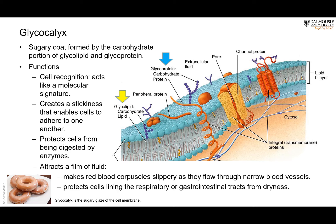The glycocalyx protects the cell from being digested by enzymes, provides cell recognition, and attracts a film of fluid. Just like sugar left out in wet weather attracts moisture. For red blood cells, which must navigate through capillaries that are sometimes narrower than the cell itself, the cell has to fold and navigate through — it needs a slippery surface, which is provided by the glycocalyx. Cells exposed to air, like those lining the mouth, esophagus, pharynx, and respiratory tree, might become dried out if the glycocalyx did not always attract water. So that is very important.